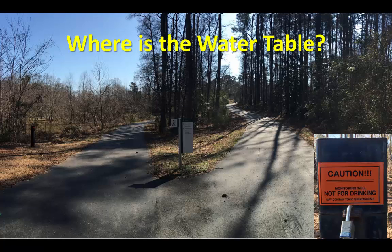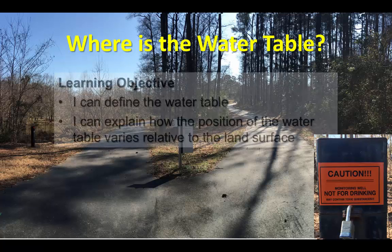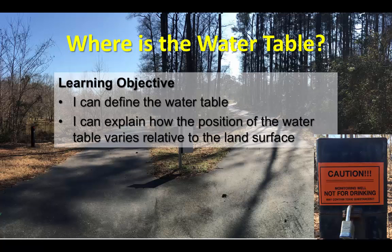In this lesson we want to take a close look at the water table, a key feature that gets discussed a lot when we talk about the availability of groundwater. Our learning objective is to use some simple models to define what the water table represents and take you on a short field trip to explain how the position of the water table varies relative to the land surface.